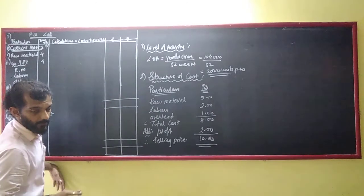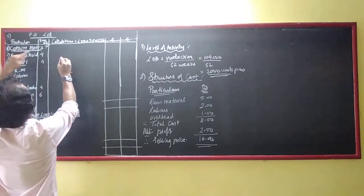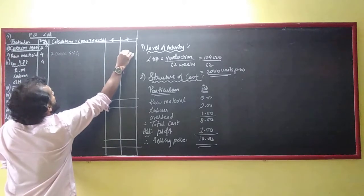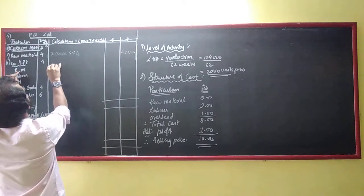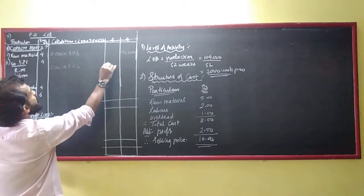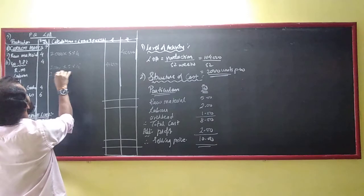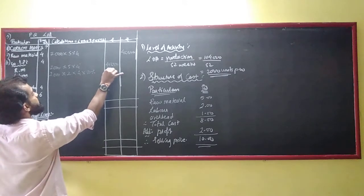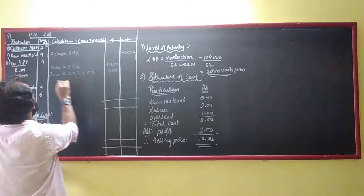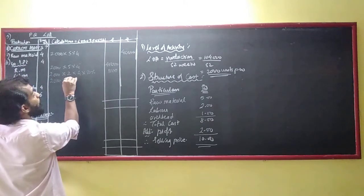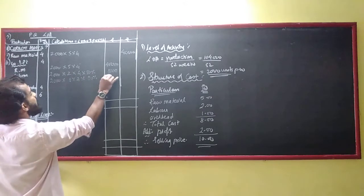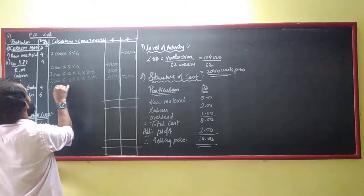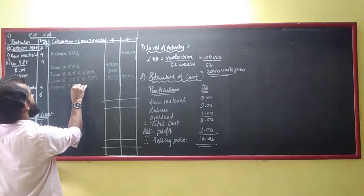Level of activity 2000 into rate per unit 5 into 4 equals 40,000 for raw material. Work in progress: 2000 into 5 into 4 equals 40,000, 2000 into 2 into 4 into 50% equals 8,000, 2000 into 1 into 4 into 50% equals 4,000. My total work in progress is 52,000.